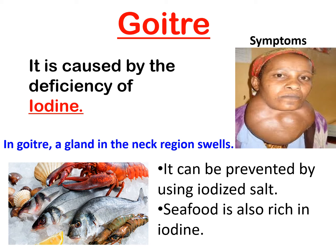Goiter is caused by the deficiency of iodine. In goiter, a gland in the neck region called the thyroid gland swells. It can be prevented by using iodized salt. Seafood is also rich in iodine.